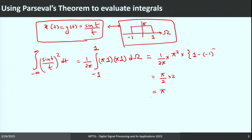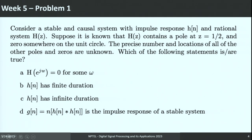This simplifies to π/2 times 2, which equals π. So the value of this integral is equal to π. Now we move on to the next question — this is Week 5's first problem. We have been given a stable and causal system with impulse response h(n) and a rational system function H(z). H(z) has a pole at z = 1/2, a zero somewhere on the unit circle, and no information about other poles. We have to select the true statements. We can directly conclude that the system will have all poles inside the unit circle because the system is stable and causal.